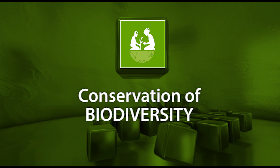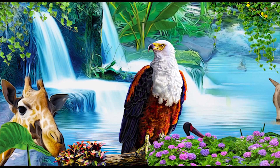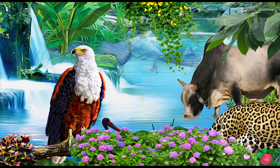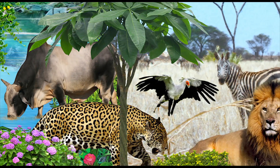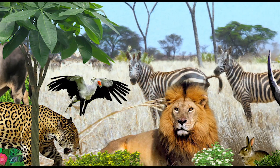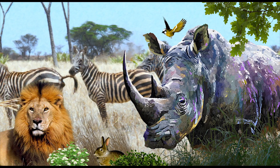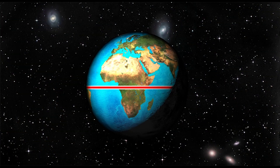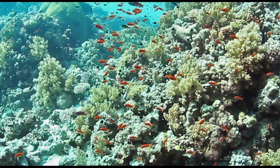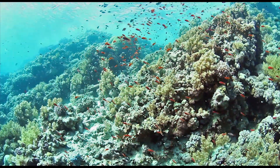Conservation of Biodiversity. Biological diversity or biodiversity refers to the different types of animals, plants, and microorganisms found in an area. Biodiversity is not distributed evenly on Earth. It is richest in the tropics, and terrestrial biodiversity tends to be highest near the equator.